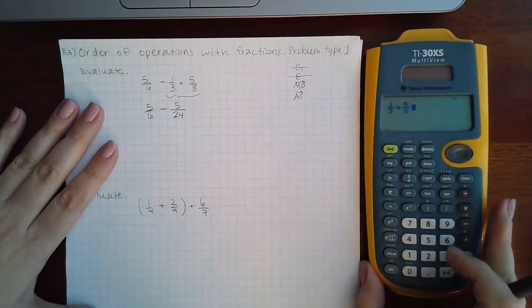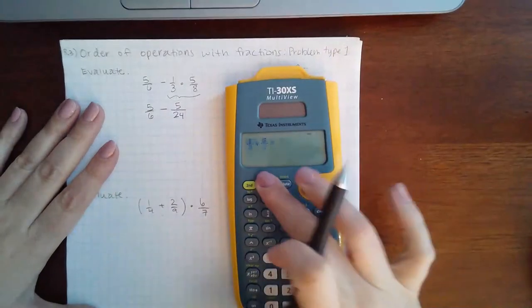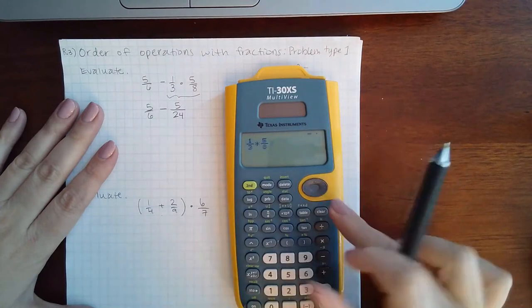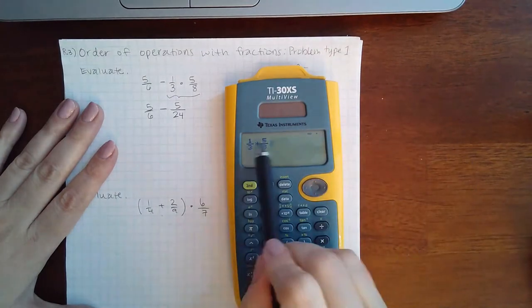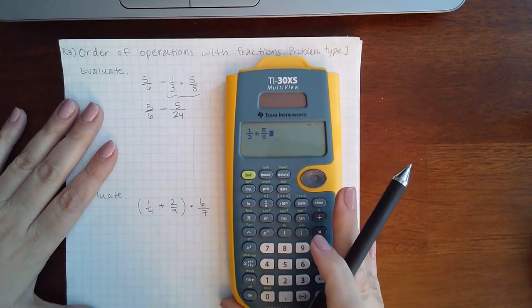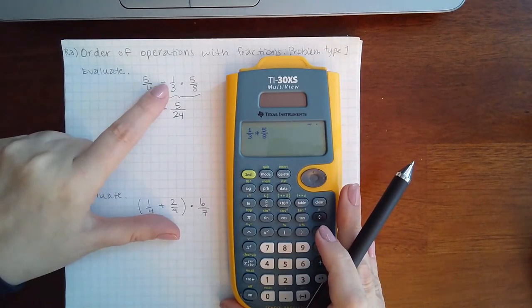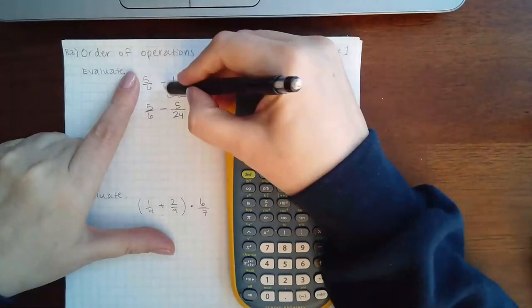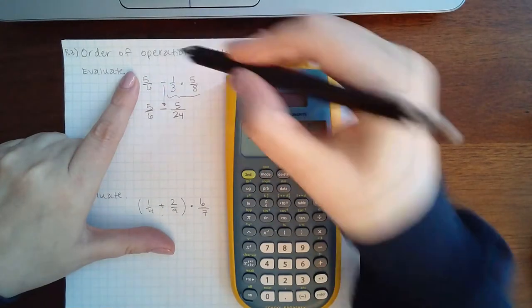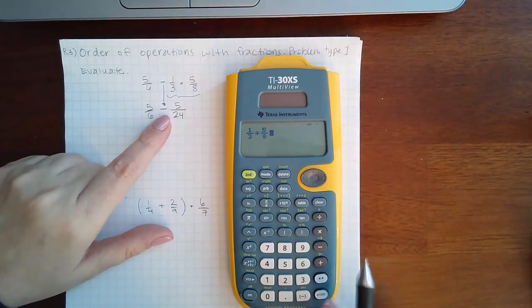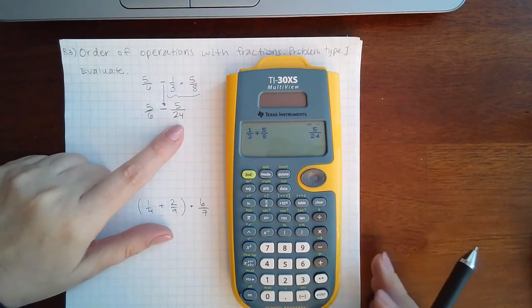Now what I like about this calculator is that as long as the mode is math print, I'm going to quit out of here, it will let you type this in so that it looks exactly like what it does on your paper. Notice I did not type in the minus sign because I brought the minus sign down. So I was only typing in the rest of the problem that I did not bring down. And then it gave me 5 over 24.